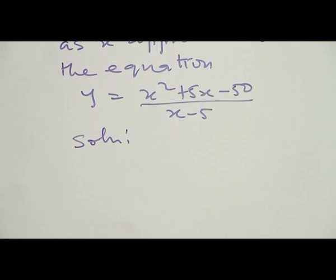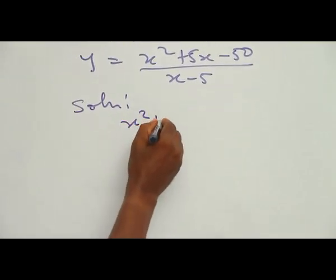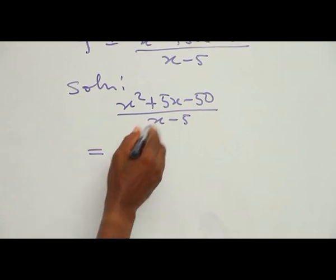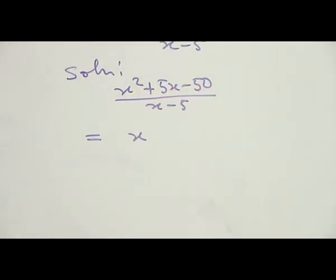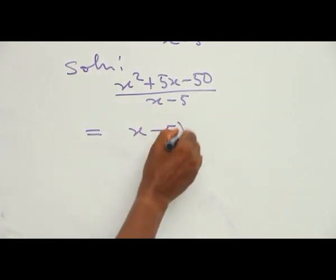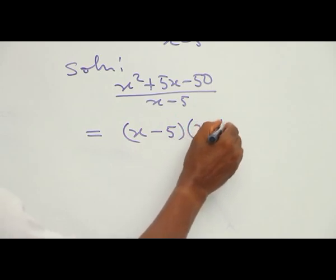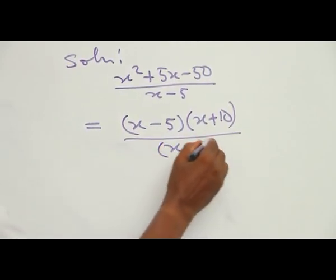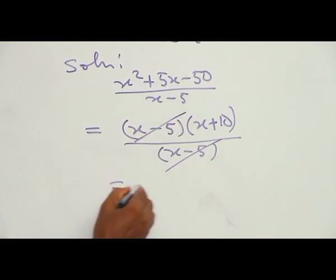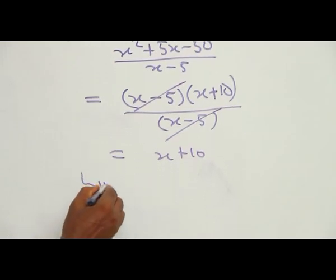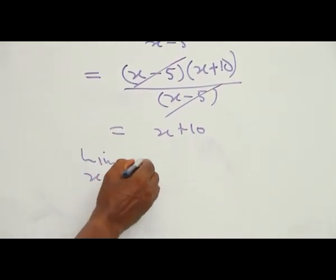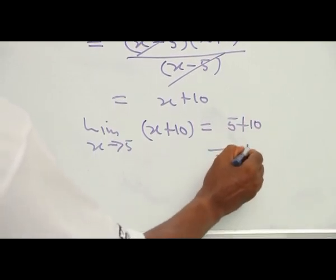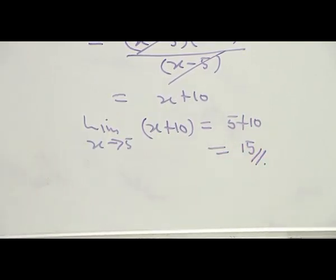Another example on limits: evaluate the limit as S tends to 5 of (S² + 5S − 50)/(S − 5). Factorize the numerator: (S − 5)(S + 10). Cancel (S − 5) with the denominator, leaving S + 10. So the limit as S tends to 5 is 5 + 10 = 15.